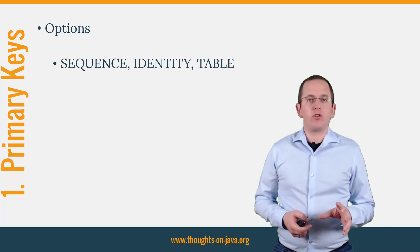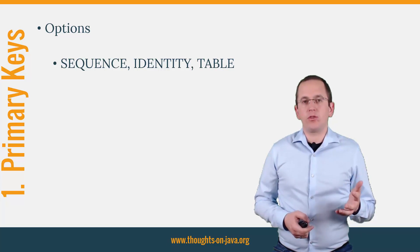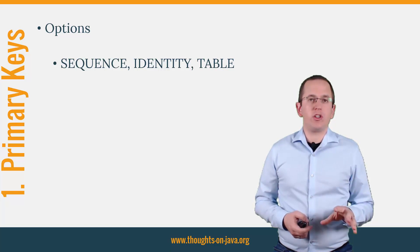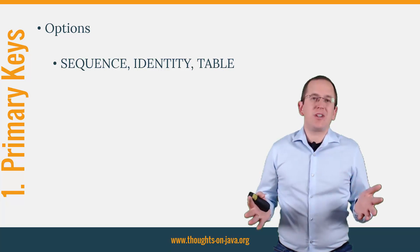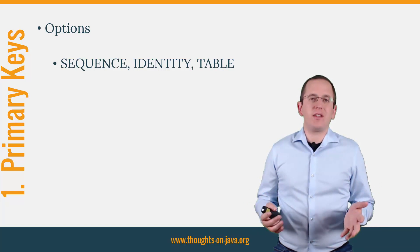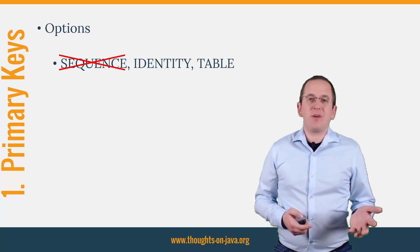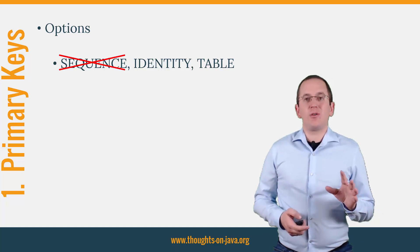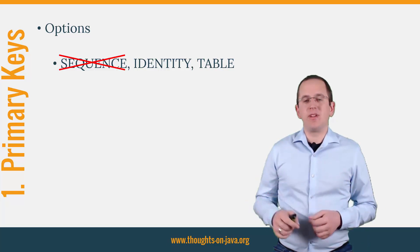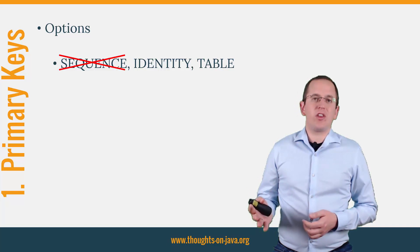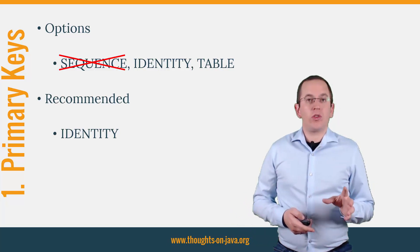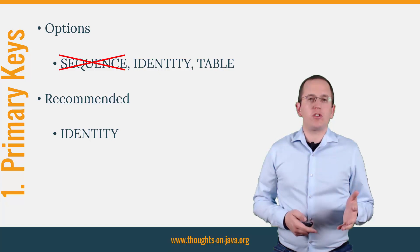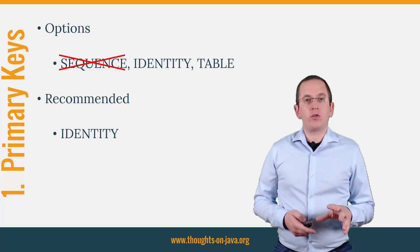In general, I recommend using the sequence strategy because it allows Hibernate to use JDBC batching and other optimization strategies that require the delayed execution of SQL insert statements. But you can't use this strategy with a MySQL database — it requires a database sequence and MySQL doesn't support this feature. So you need to choose between identity and table. That's an easy decision considering the performance and scalability issues of the table strategy. If you're working with a MySQL database, you should always use GenerationType.IDENTITY.